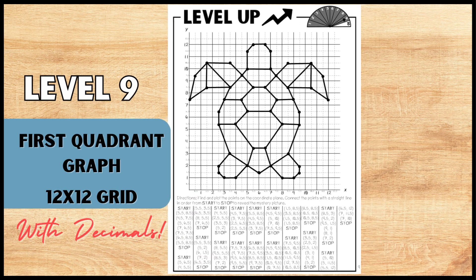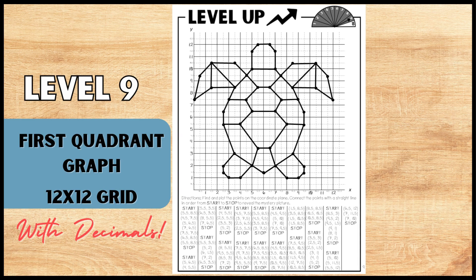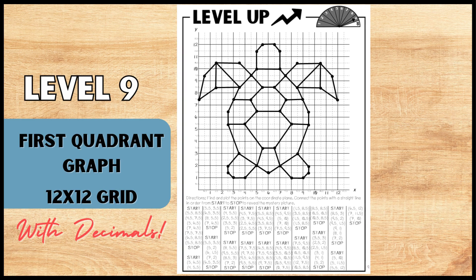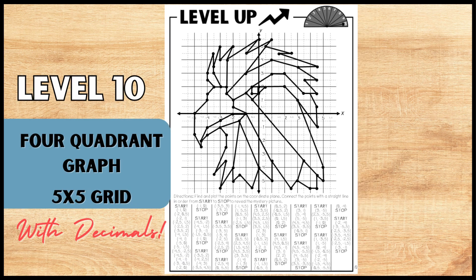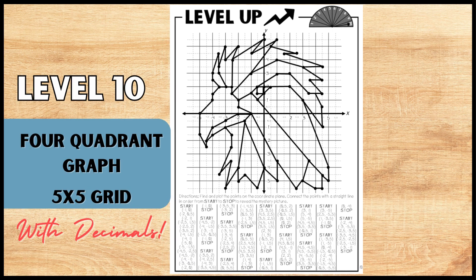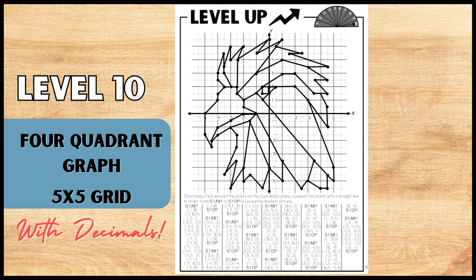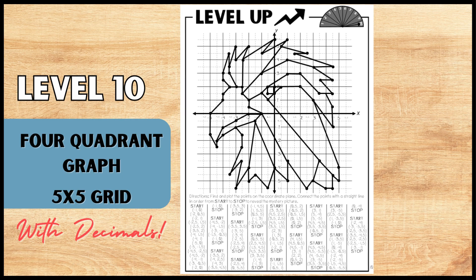Level 9 introduces students to graphing with decimals on a first quadrant graph that is 12 by 12 and the decimals use guides. And level 10 mystery picture has your students graphing with decimals on a four quadrant graph with guides as well.